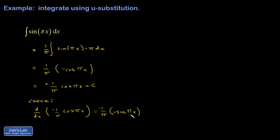The chain rule says now you have to multiply by the derivative of pi x with respect to x, which is just pi. So there's my minus sign, gone. There's my pi, gone. And I get what I started with. I can also perform this integral formally. So I'm going to say let u equal pi x.